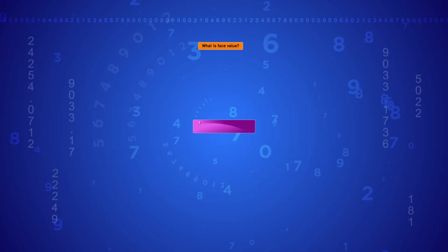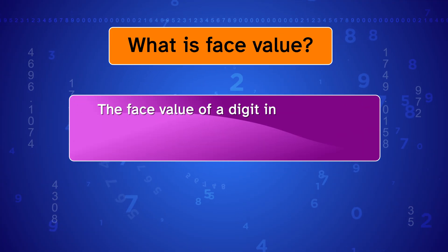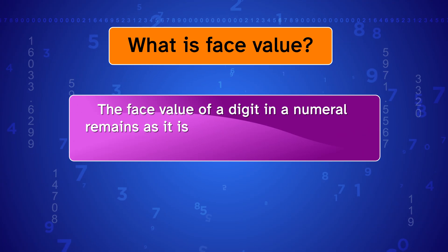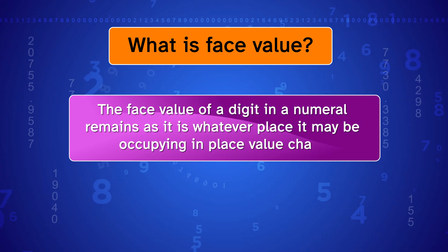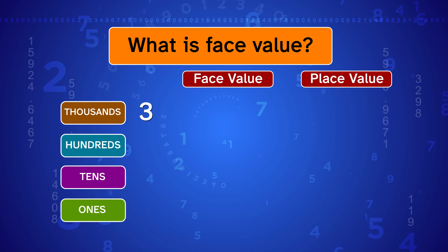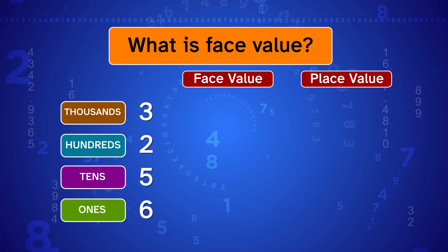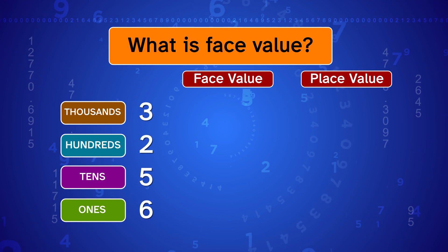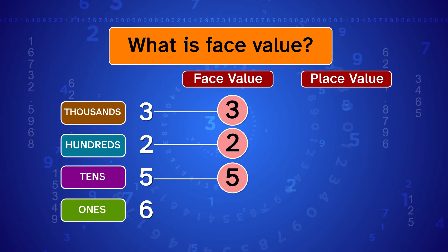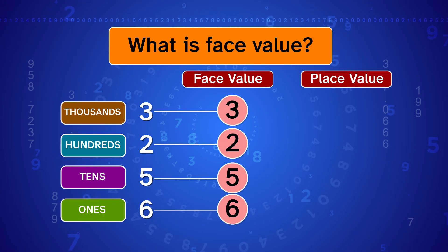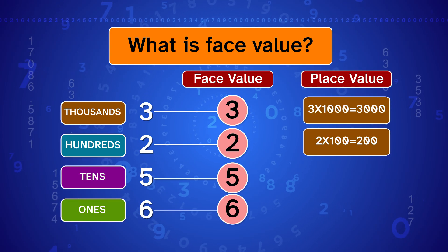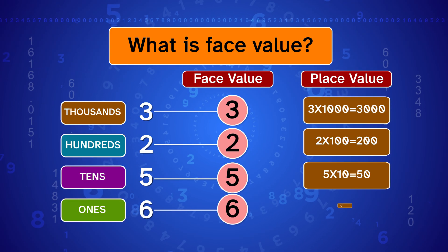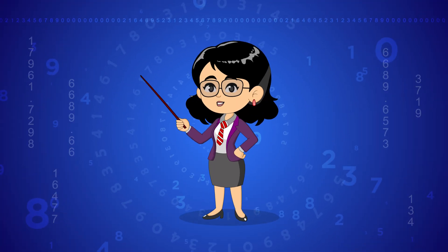What is face value? The face value of a digit in a numeral remains as it is, whatever place it may be occupying in the place value chart. For example, in 3,256, the face values of the digits are simply three, two, five, and six. But the place values of the digits are three thousand, two hundred, fifty, and six.